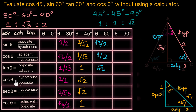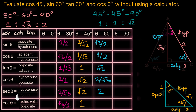Cosecant theta is the reciprocal of sine theta — hypotenuse over opposite — which is 2/√3. Secant theta is hypotenuse over adjacent, which is 2/1 = 2. You can also see secant theta as the reciprocal of cosine theta, which is the reciprocal of 1/2, giving 2. Cotangent theta is adjacent over opposite, which is 1/√3 — also the reciprocal of tan theta.